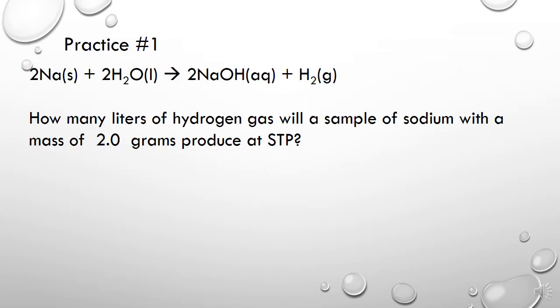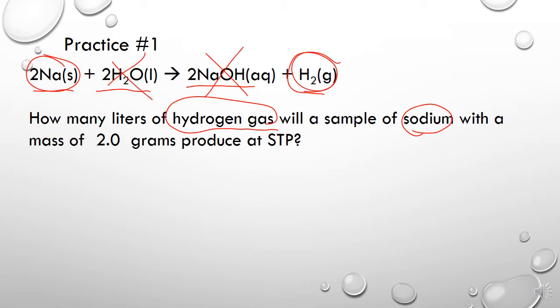We're going to look at our first practice problem. Here we have sodium, shown here with Na, and we've got sodium plus water makes sodium hydroxide and hydrogen gas. The question is asking about hydrogen gas and sodium. We do not care about those other guys for this question. It says how many liters of that gas will we get if the sodium weighs 2 grams at STP? If you want to try these out as you're going through this video, go ahead and pause the video, try it, and then we'll check it.